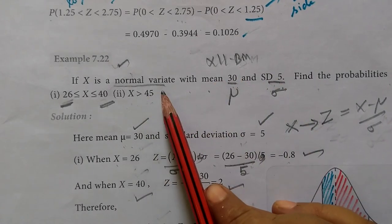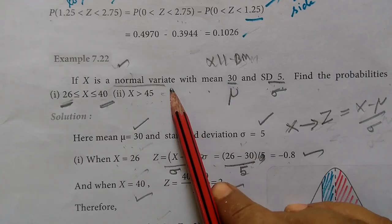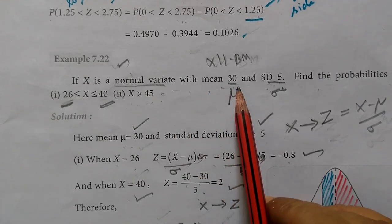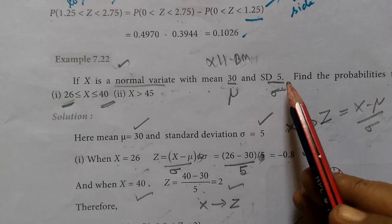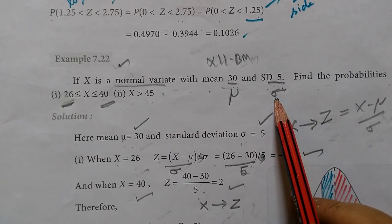X is a normal variate with mean 30, where mean is denoted by μ and standard deviation is denoted by σ.